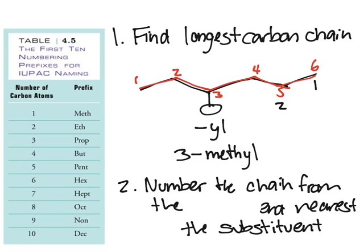Essentially, you want to number it so that this group gets the lowest number. If you number it from left going to right, you'll have that as 3. If you number it from right going to left, you'll have that as 4. So it'd be correct to number it the way I did it at first.